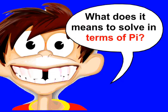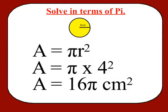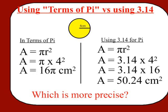Now your teacher might ask you to find the area of the circle in terms of pi. What does that mean — to solve in terms of pi? Actually, this is a lot easier. When you solve in terms of pi, you don't substitute for pi, you just leave it. So we start with our formula and substitute in, but we don't substitute anything for pi — we just leave it. Our radius is 4, so we substitute that in, and the area of the circle would be 16 pi centimeters squared. This is our area in terms of pi.